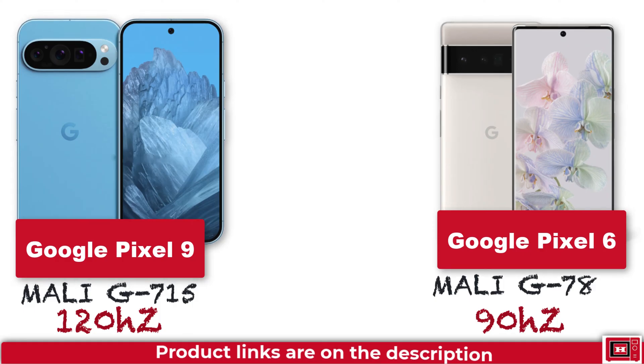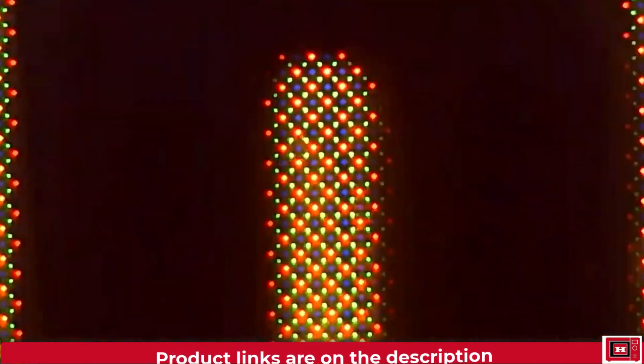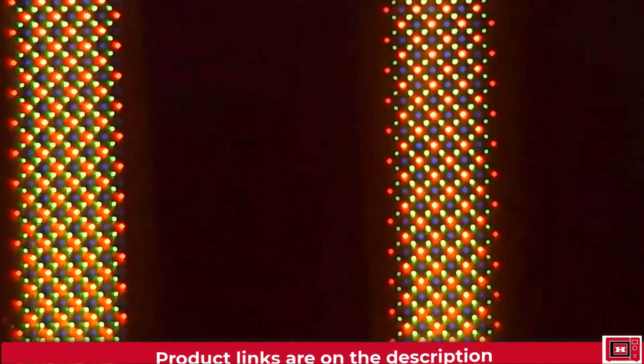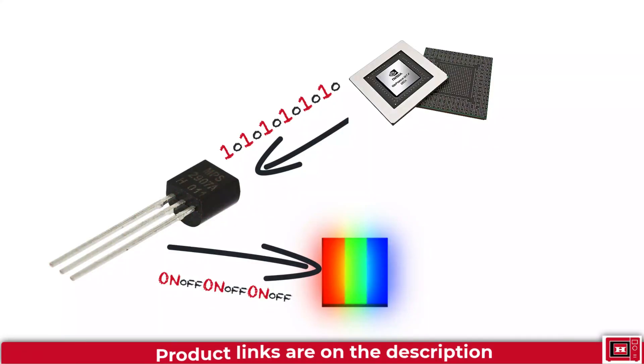If you zoom closer, you'd observe this difference in speed and smoothness is because the subpixels on the Pixel 9 are switching on and off faster, while that of Pixel 6 still has a little delay only observed in milliseconds.